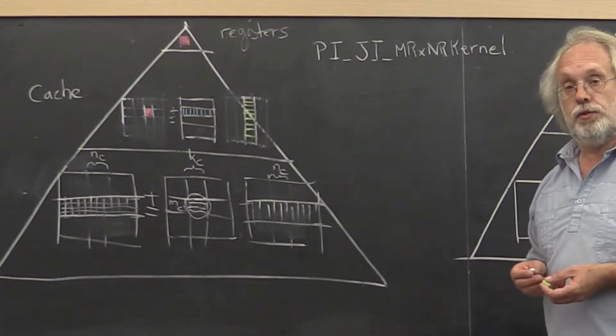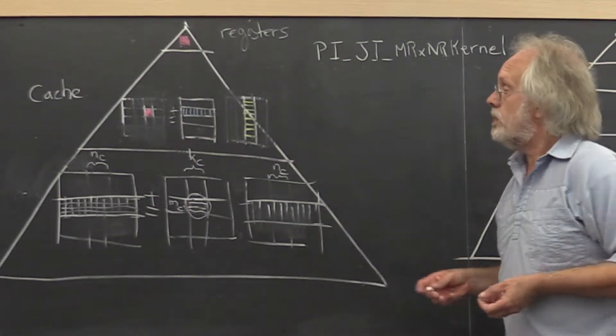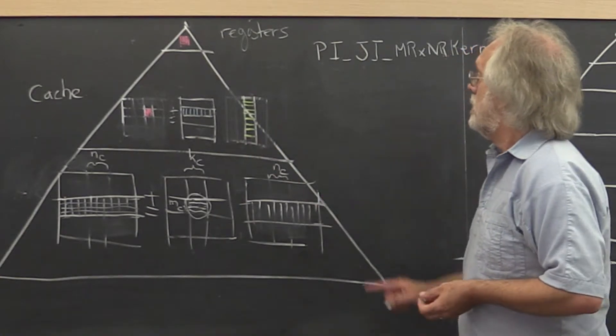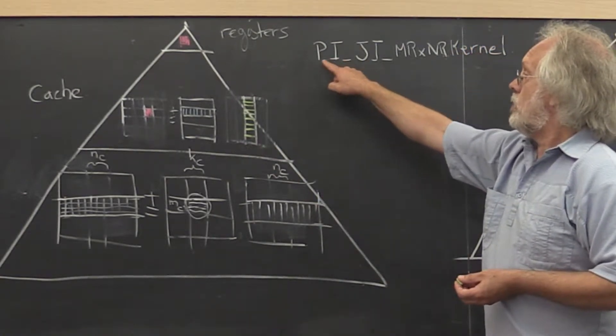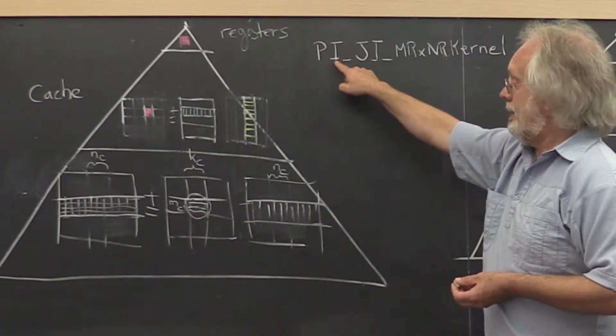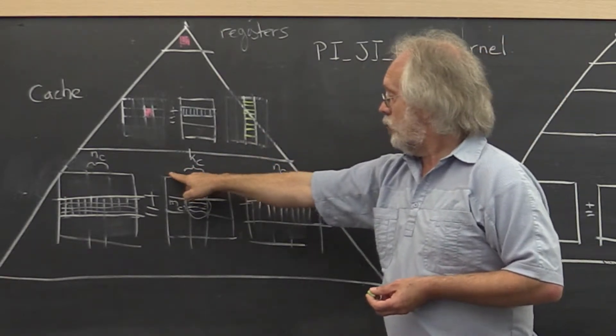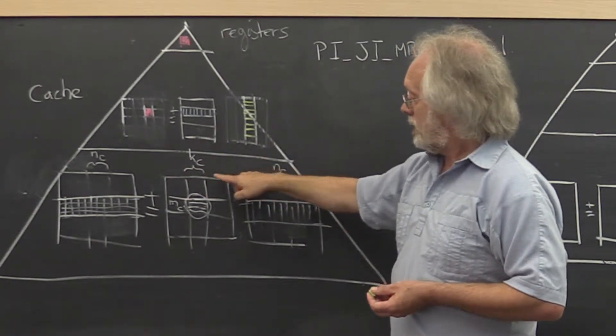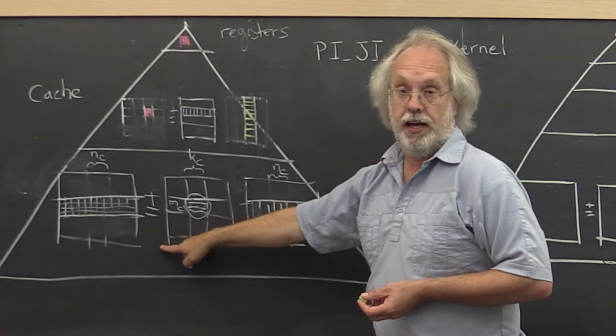Through a sequence of videos and exercises, we've now arrived at this picture and an implementation that orders the loops as PI. The PI is a loop over column blocks and row blocks of A.